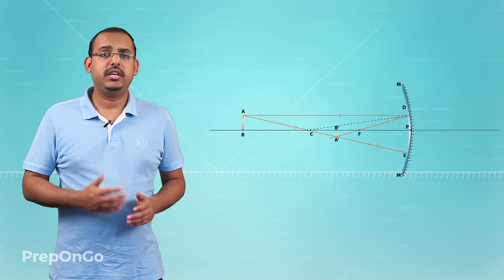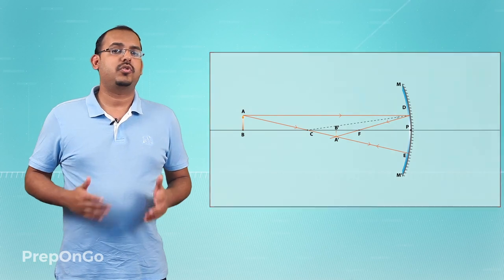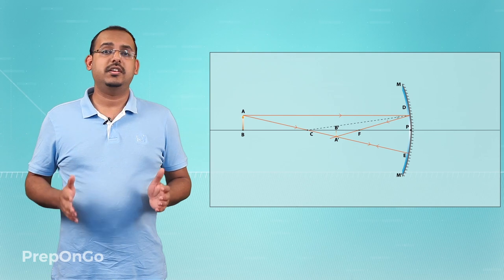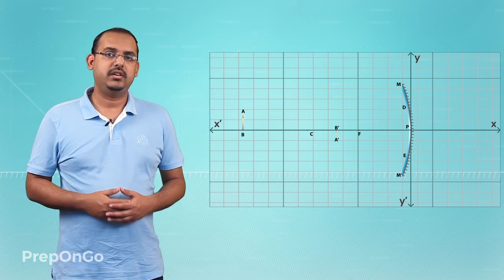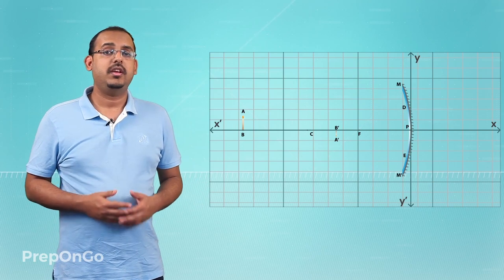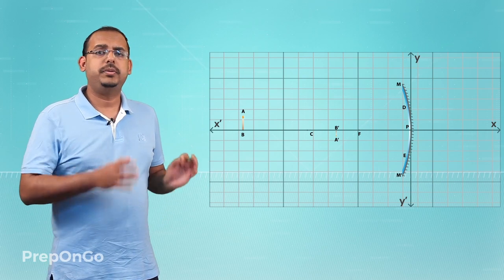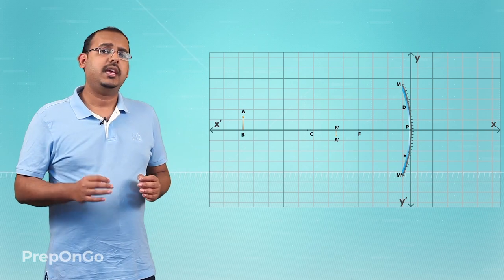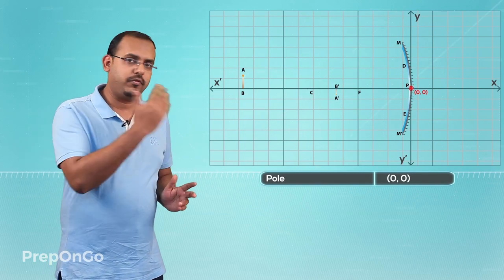The first thing to note whenever we are talking about sign conventions is that the plane in which the ray diagram is drawn, or the plane in which the image formation actually takes place, is always assumed to be a Cartesian plane with the x and the y axis. The mirror is always placed in such a way so that the pole of the mirror coincides with the origin of the Cartesian plane.